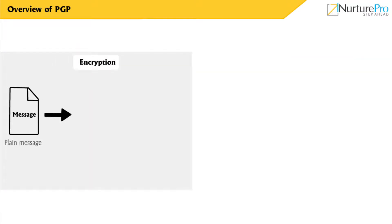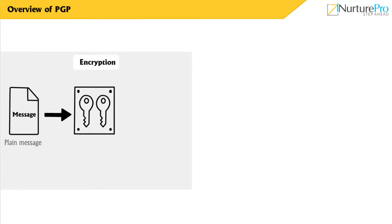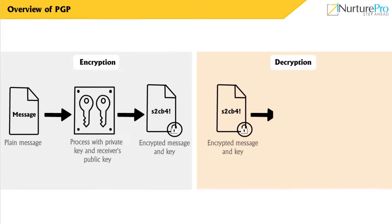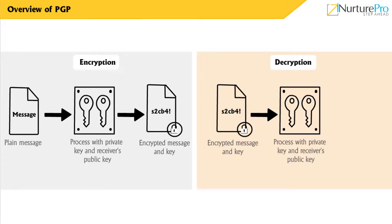PGP uses a faster encryption algorithm for encrypting messages, as encrypting the whole message takes time. It then utilizes a public key for encrypting the shorter key used for encrypting the whole message. The encrypted message and the short key are sent to the recipient, who uses the receiver's private key to decrypt the short key and then use that particular key for decrypting the message.